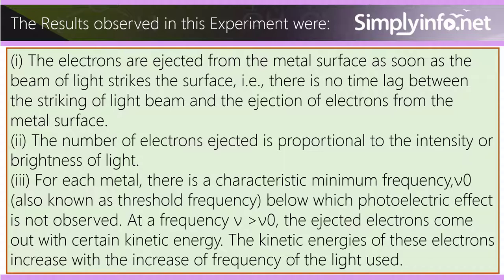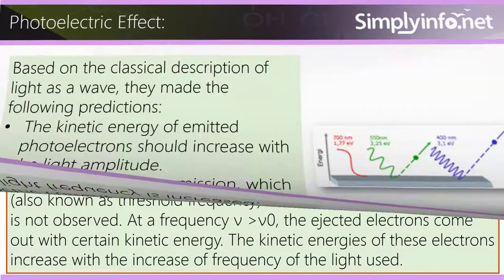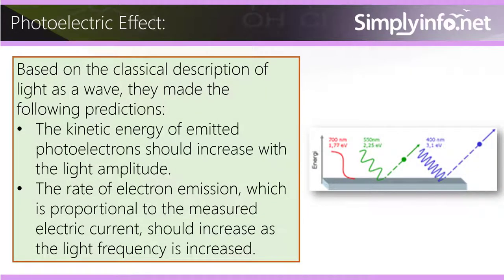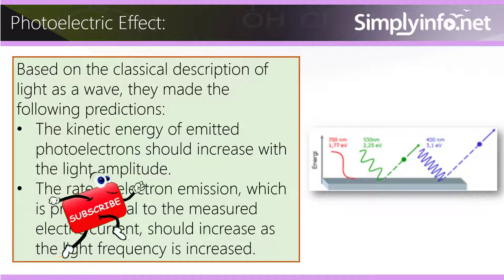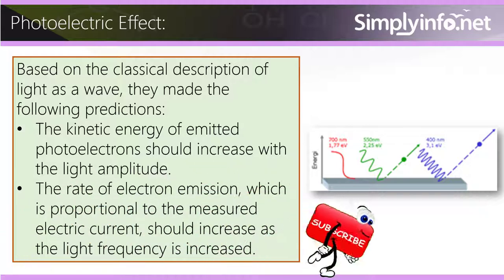Based on the classical description of light as a wave, they made the following predictions: (1) The kinetic energy of emitted photoelectrons should increase with the light amplitude. (2) The rate of electron emission, which is proportional to the measured electric current, should increase as the light frequency is increased.